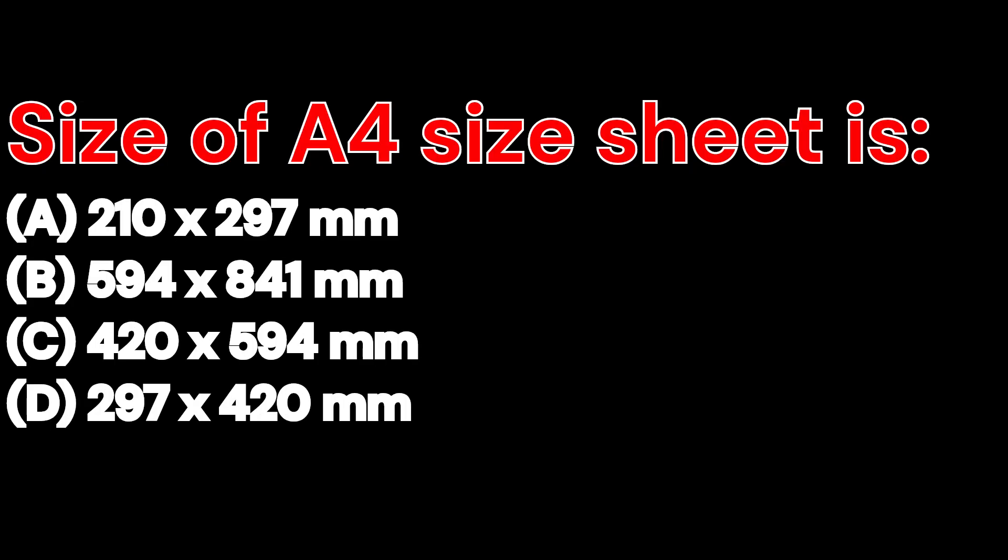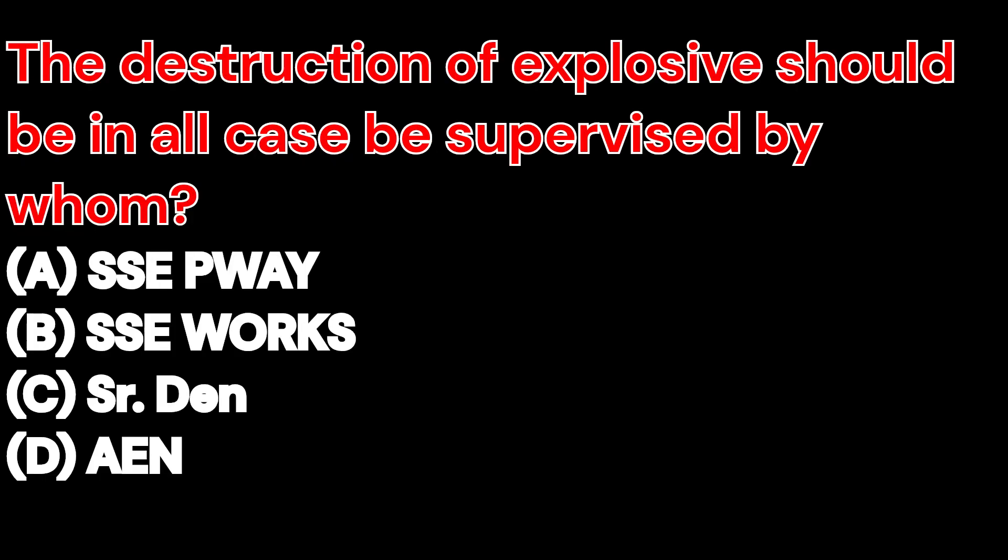Size of an A4 size sheet is: A. 210 by 297 mm. B. 594 by 841 mm. C. 420 by 594 mm. D. 297 by 420 mm. And the right answer is 210 mm by 297 mm.